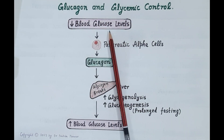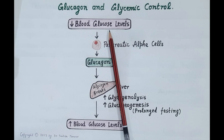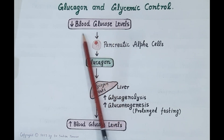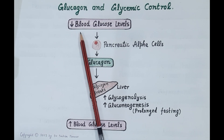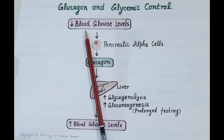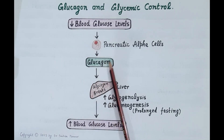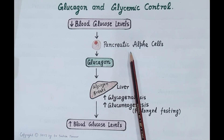During overnight sleep and in between meals, when we are fasting and not eating, blood glucose levels fall. This fall in blood glucose levels stimulates the release of glucagon from pancreatic alpha cells.